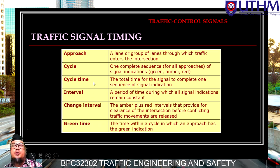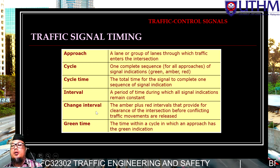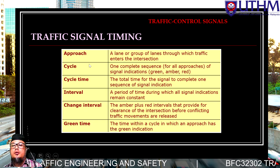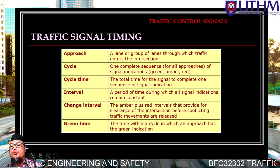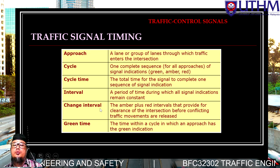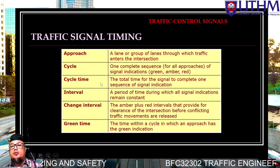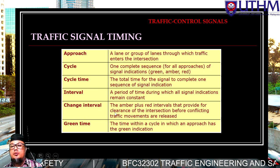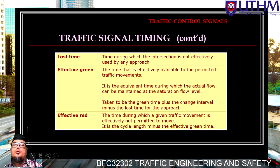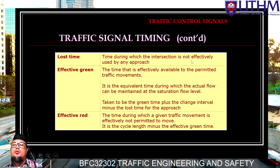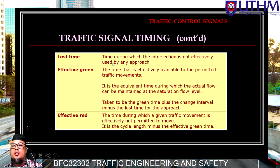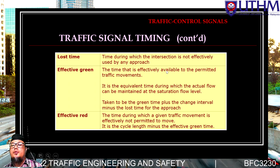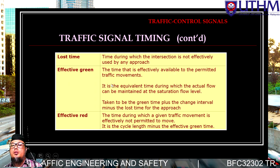We have to understand that there are very specific parameters and terms used in traffic signal design, because they are referred to by their values — like cycle time, interval, and change interval. 'Lost time' is the time during which the intersection is not effectively used by any approach. 'Effective green time' is the time effectively available to permit traffic movement.